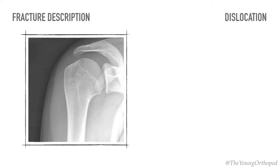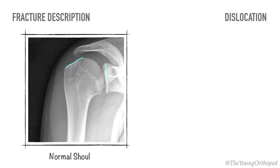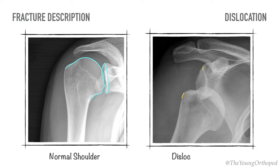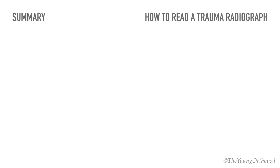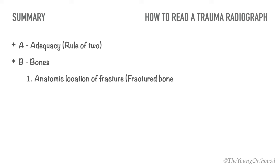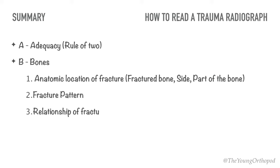Subluxation or dislocation of the joint is present if there is disruption of the normal relationship of articular surfaces, and one must also note the direction of the dislocation. By following this simple approach, one can easily describe any trauma radiograph in a scientific way without missing any essential details.